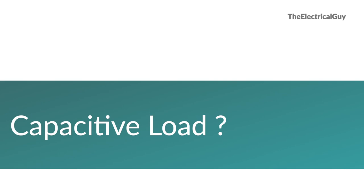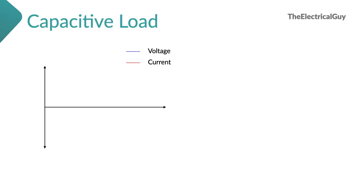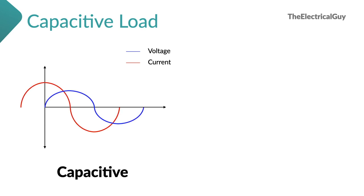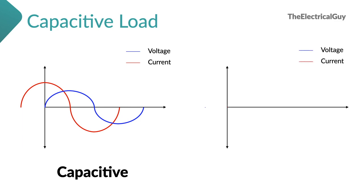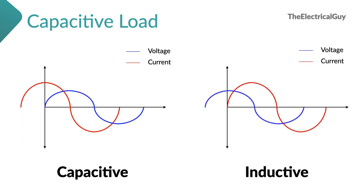Capacitive load is similar to that of inductive load — in capacitive loads also, current and voltage are out of phase with each other. The only difference is that in capacitive load, current leads the voltage by 90 degrees, whereas in inductive load, current lags behind the voltage by 90 degrees.